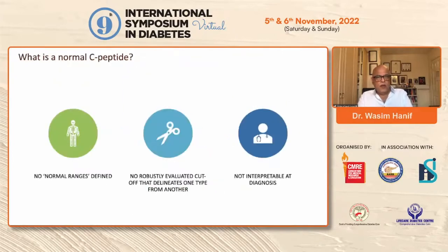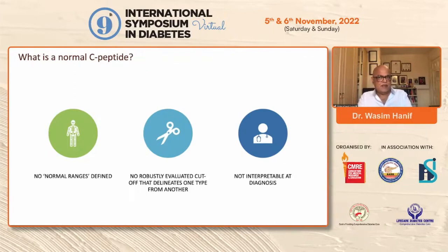What is a normal C-peptide? There are no normal ranges defined for C-peptide, no robustly evaluated cutoff that delineates one type from another, and it is not interpretable at the time of diagnosis. This is something very, very important to understand.